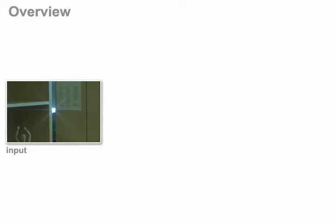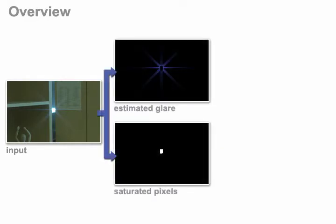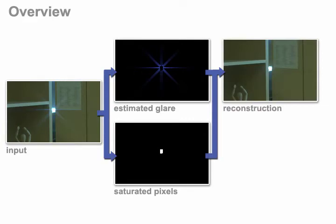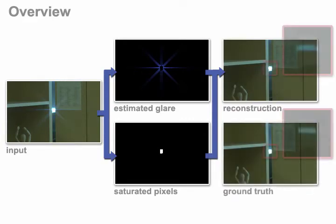The filter spreads out the energy from very bright image regions to neighboring pixels in form of a star-shaped glare pattern. We present algorithms to separate the glare from the desired scene and use the encoded information to reconstruct saturated image regions.